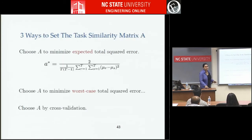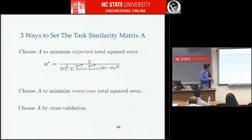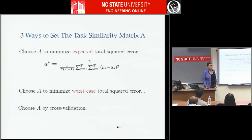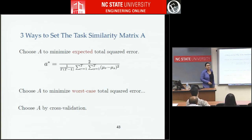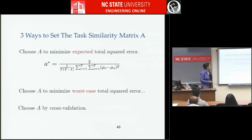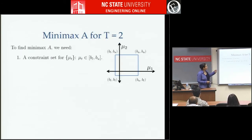There are three ways to set that task similarity matrix. First, minimize the total squared error — as just discussed. Second, choose A to minimize the worst-case total squared error — a more conservative minimax approach where we make sure we don't screw things up. Third, the very standard machine learning approach: choose your regularization parameters by cross-validation, which works but takes a lot of data and some fussing around.